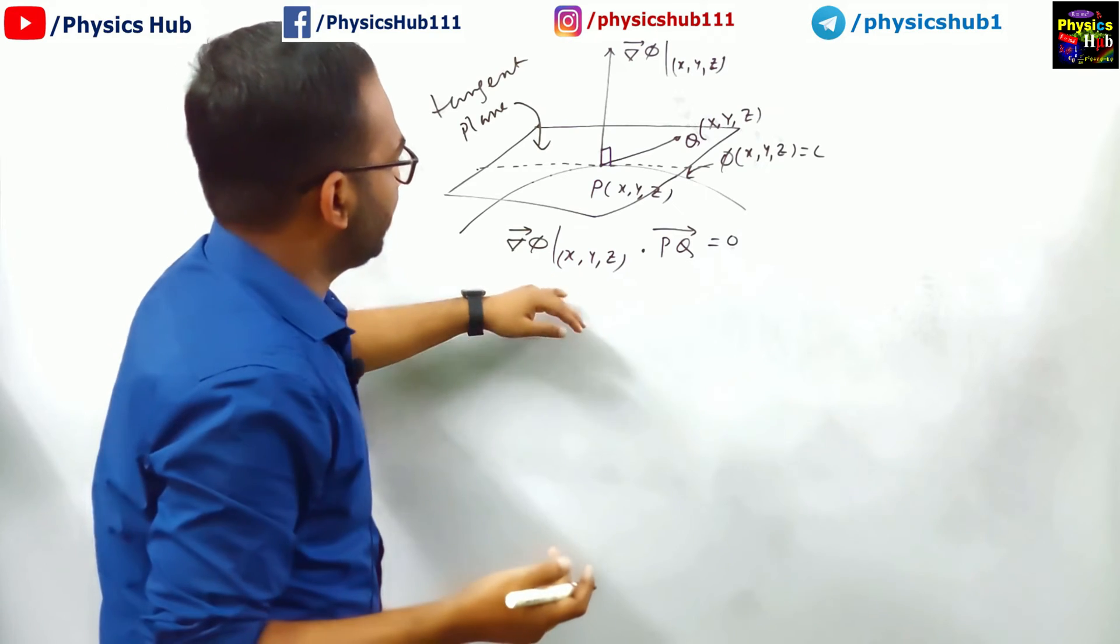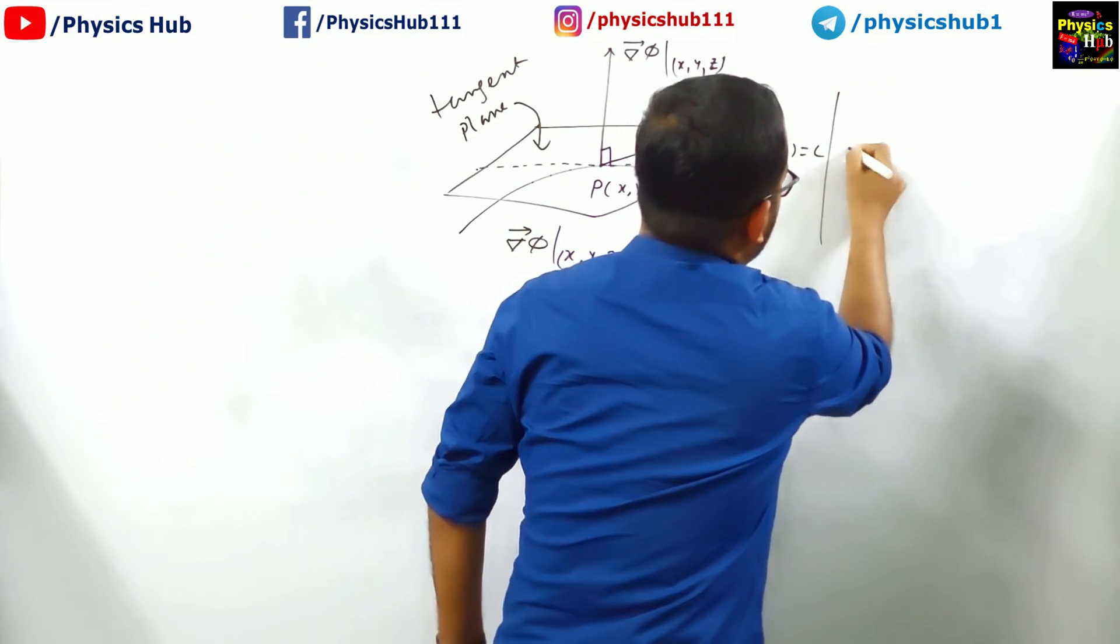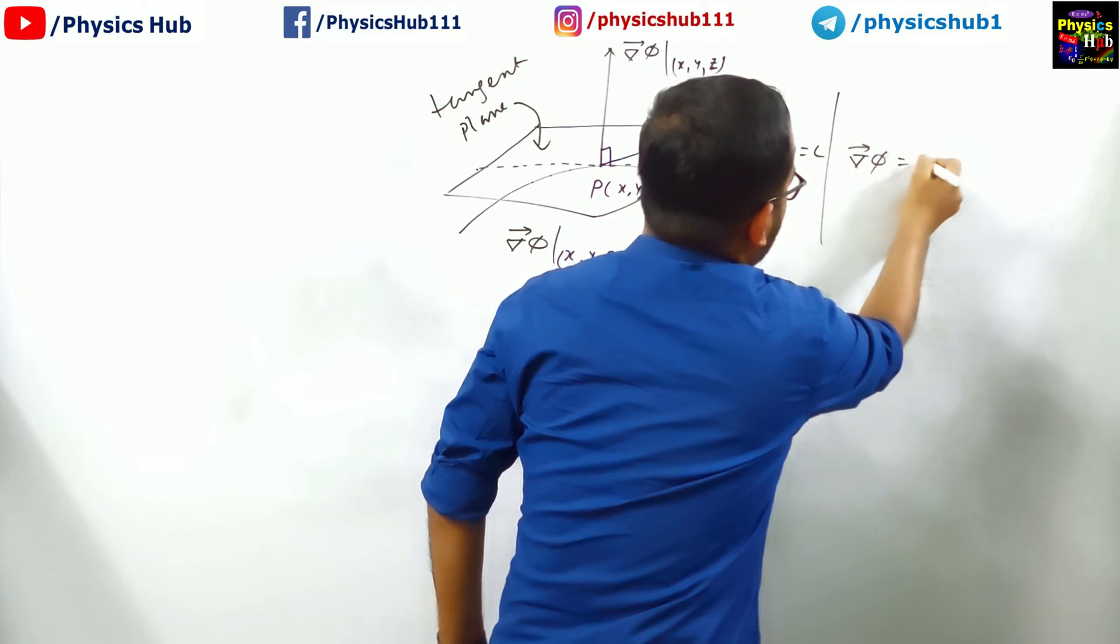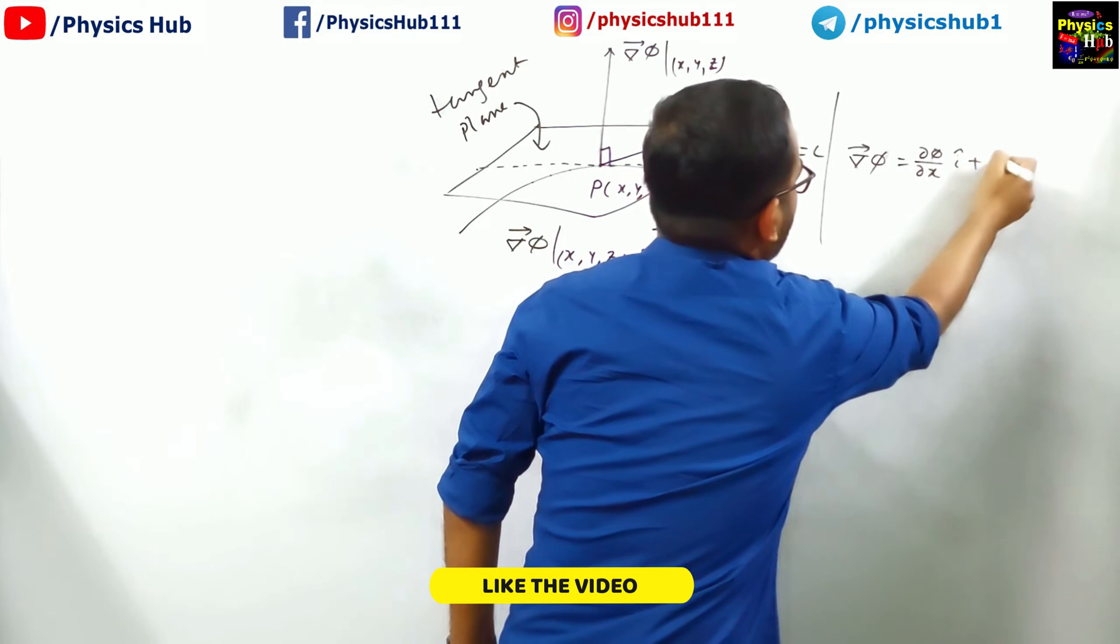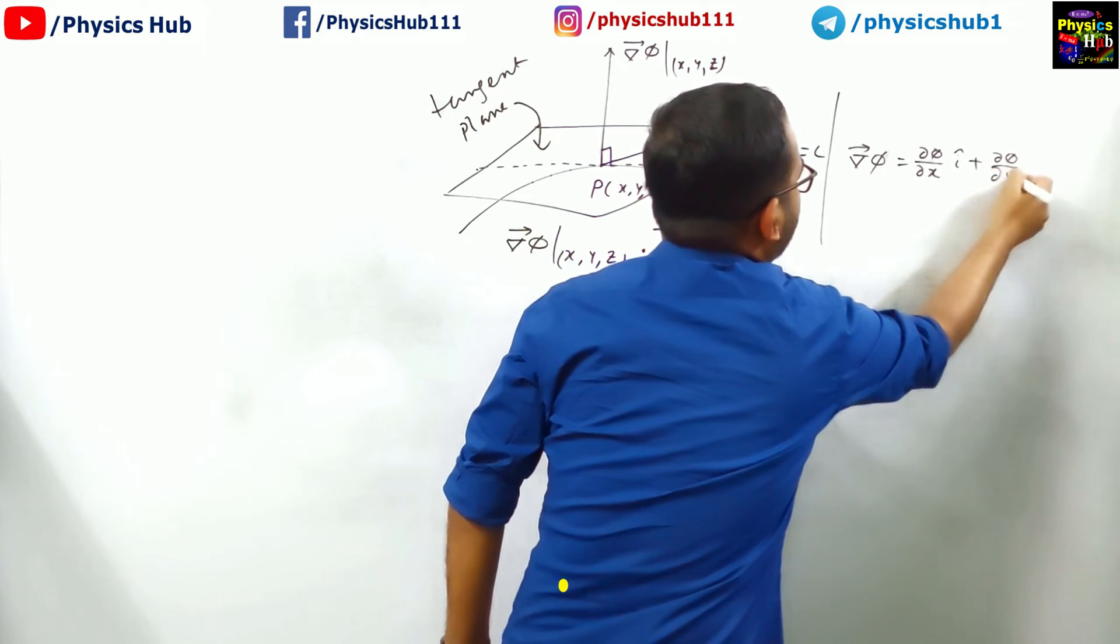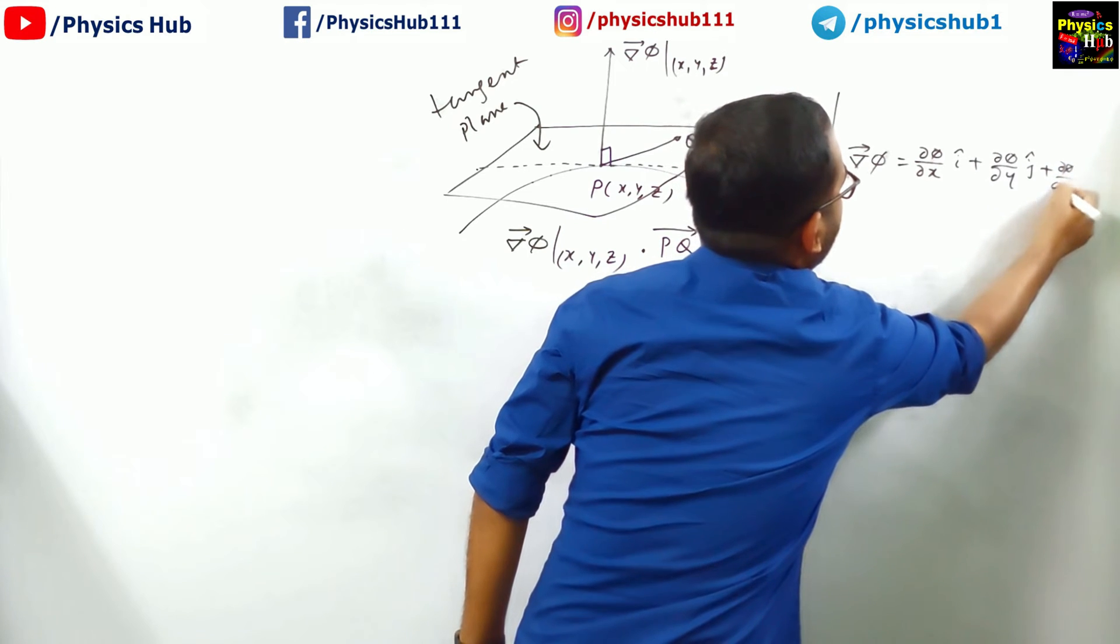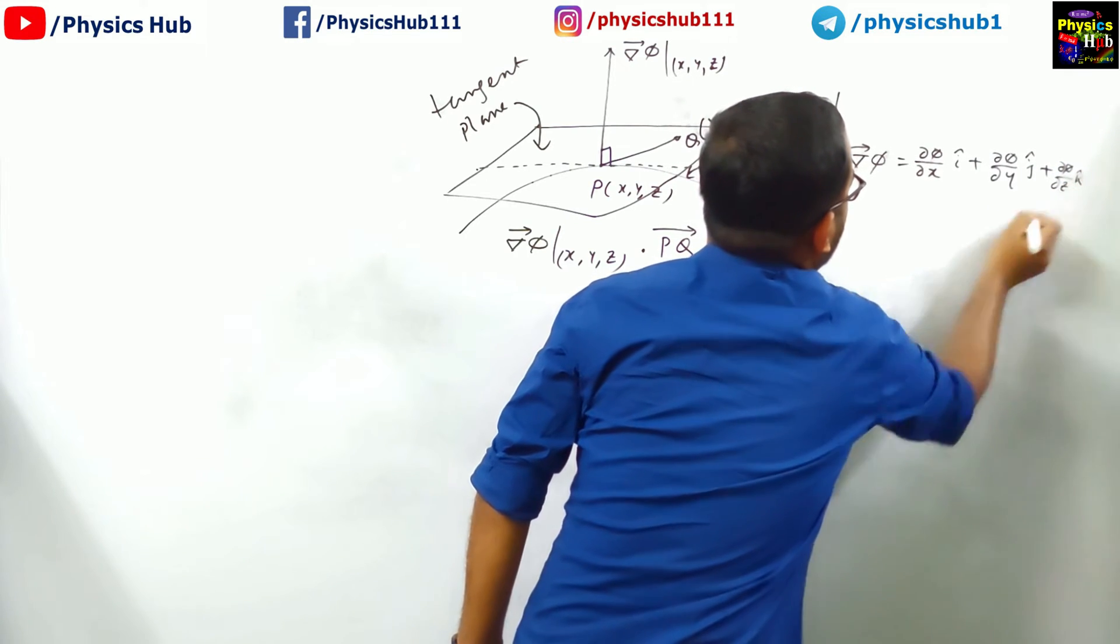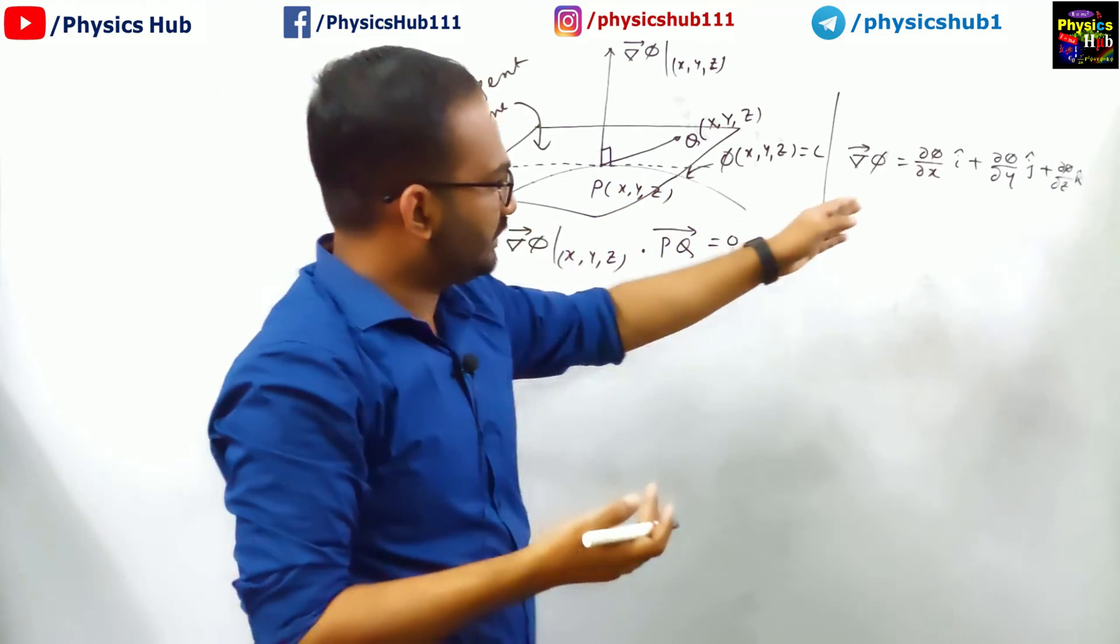Now, what is grad phi evaluated at x, y, z? Let us evaluate it here. Grad phi equals del phi by del x i cap plus del phi by del y j cap plus del phi by del z k cap. This is evaluated at the point x, y, z, so this value will remain the same.